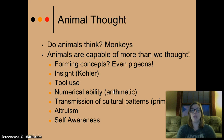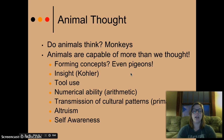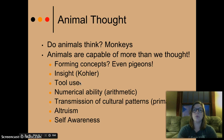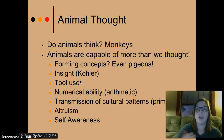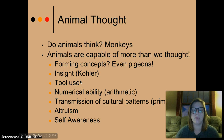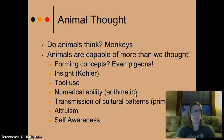Animal thought — last subject. Do animals think? Scientists have found that yes, they do. They studied mostly monkeys when they thought of this. Animals are capable of more than we originally thought — they're capable of forming concepts; even pigeons can do this. They're also capable of having insight, that 'aha' moment. Kohler discovers this. Tool use was already discussed in the first chapter during natural observation. Monkeys also use tools, they problem-solve, and they're capable of basic arithmetic.